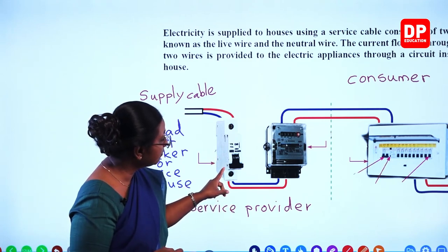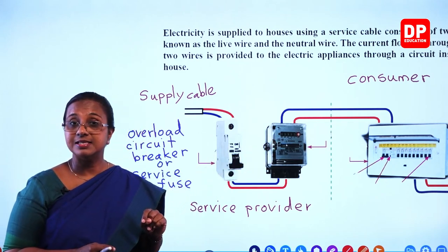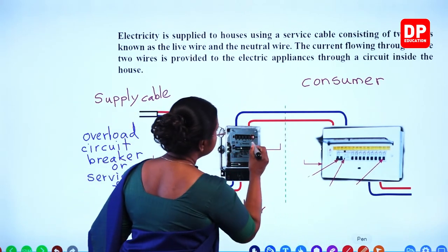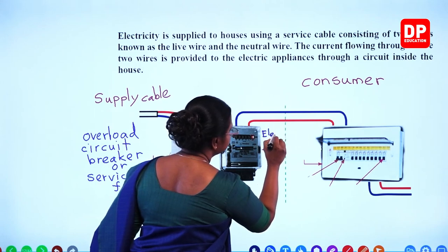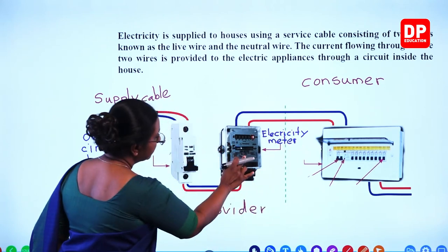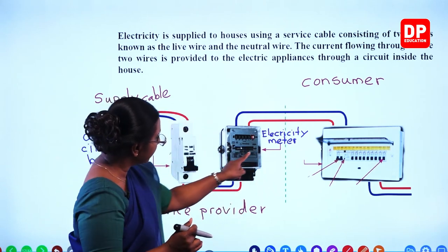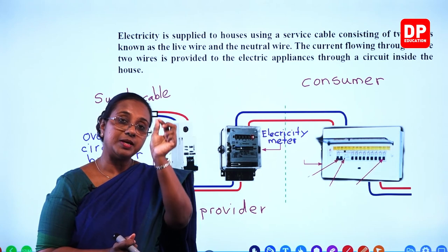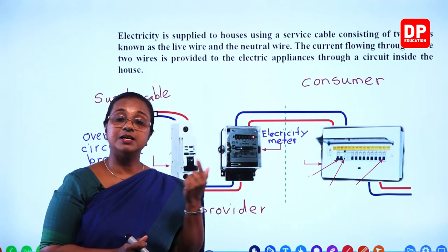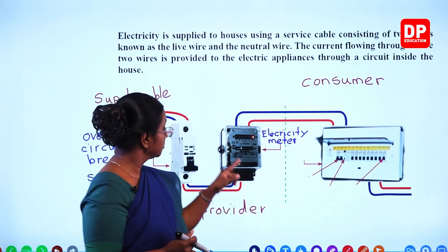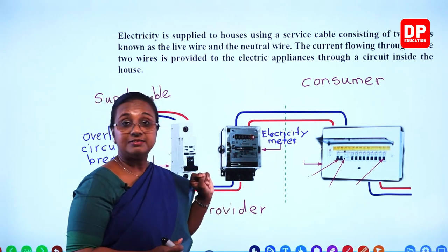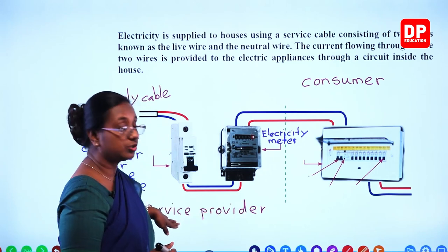From the overload circuit breaker, both wires are connected to the electricity meter. There is an indicator that keeps rotating, and when a particular mark crosses a certain point, that means a certain unit of electricity has been consumed. That will be shown on the display of the electricity meter. Both the overload circuit breaker and the electricity meter belong to the service provider.